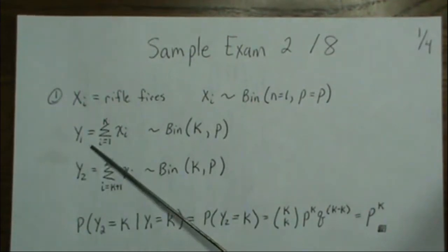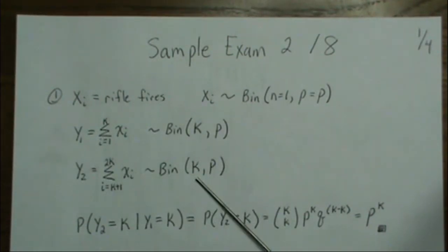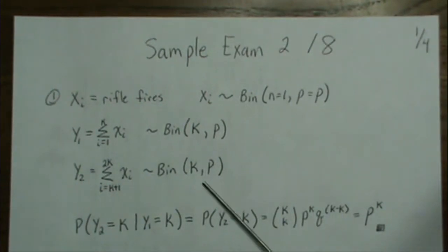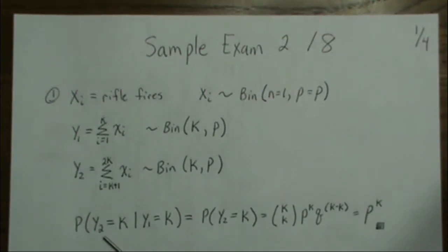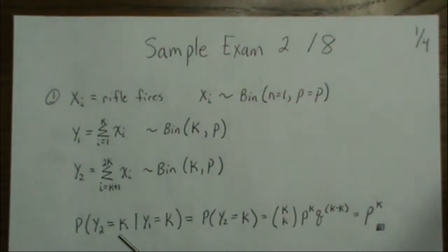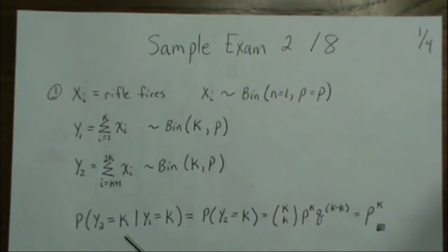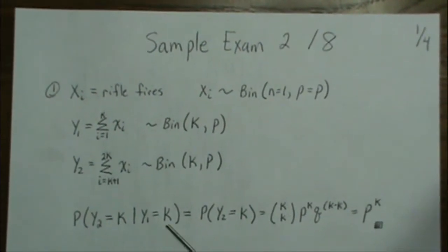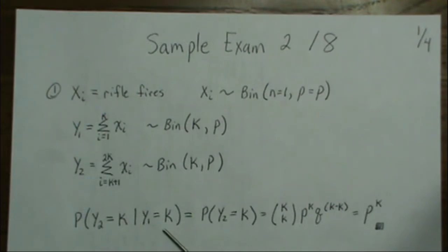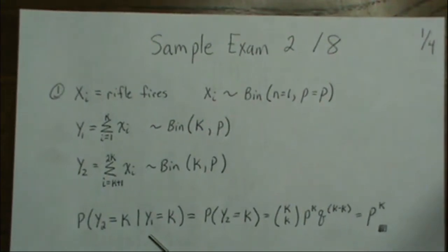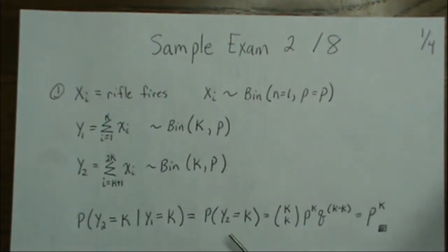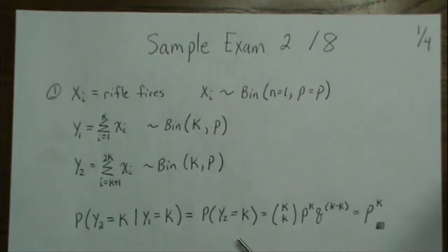Y1 and Y2 are both binomials with n equal to K and probability P. So they're asking: what is the probability that the second K firings all fire? That is, P(Y2 = K | Y1 = K), meaning it fired all K times. Well, the firings of the rifle are independent, so Y1 and Y2 are independent. So that's just the probability that Y2 equals K.